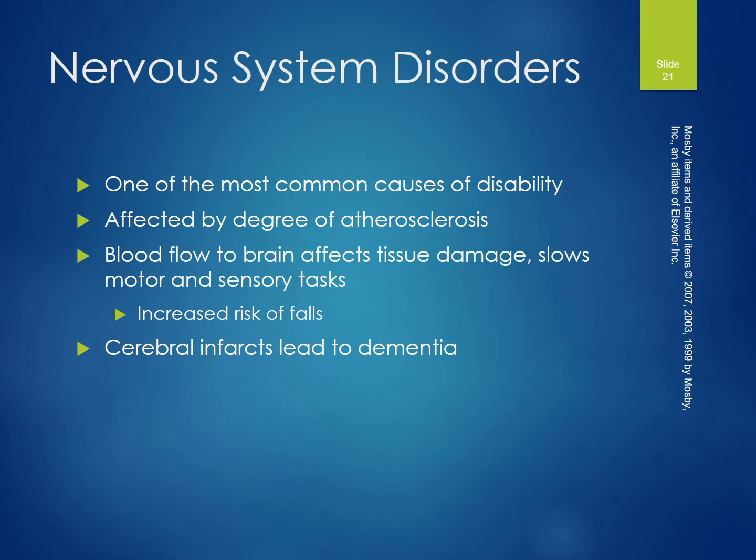Nervous system disorders are one of the most common causes of disability. The system is affected by the degree of atherosclerosis, as blood flow to the brain affects tissue damage. Aging slows motor and sensory tasks, increases risk of falls, and cerebral infarcts can lead to dementia.